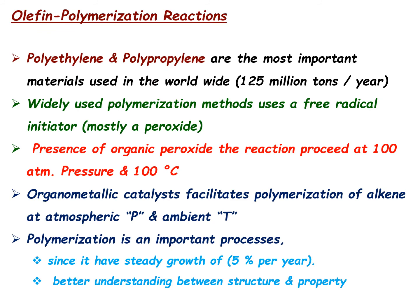These olefins need to be converted into valuable products. When you convert ethylene and propylene into polyethylene and polypropylene, they have different structures and different properties, with very good structure-property relationships. They are among the most important materials worldwide. About 125 million tons per year of these materials are synthesized — as per 2008 data — with a growth rate of approximately 5% per year, making olefin polymerization an important process.